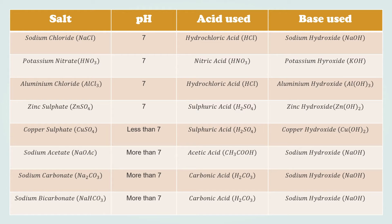I have tabulated all the salts and given the result of their pH along with the acid and base used. Salt is produced in the neutralization reaction of acid and base. For sodium chloride (NaCl), its pH is 7 — it is neutral. The acid used is hydrochloric acid (HCl) and the base is sodium hydroxide (NaOH). For potassium nitrate (KNO3), its pH is also 7; the acid used is nitric acid (HNO3) and the base is potassium hydroxide (KOH).